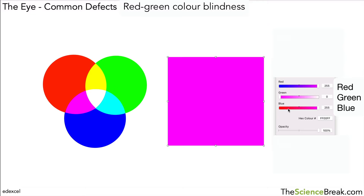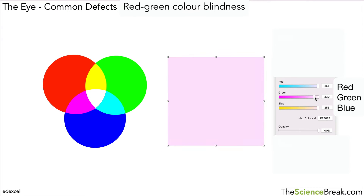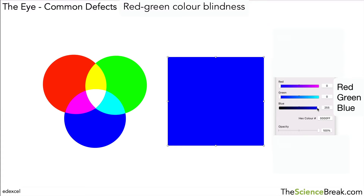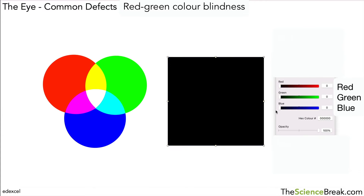And interestingly if we turn up all of the colours — the red, the green and the blue — we get white. That's that little area in the middle there when we have red, green and blue. If we remove all of the colours, so we're not detecting any of those three, you see black.